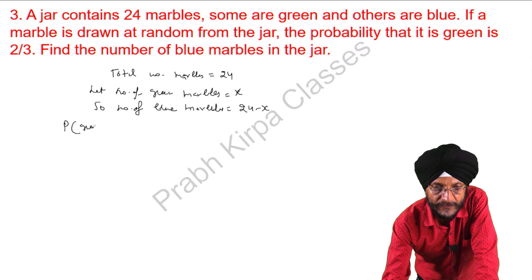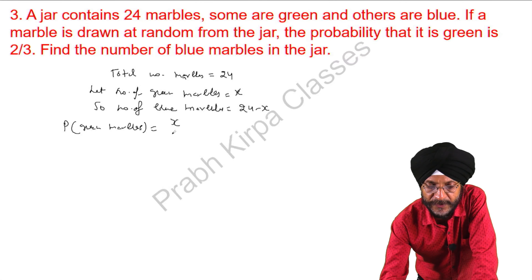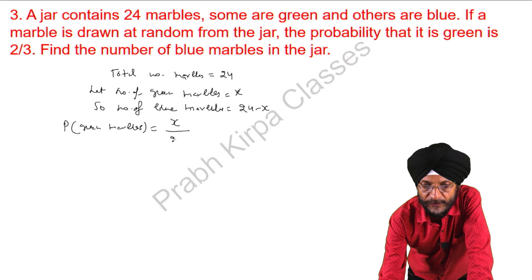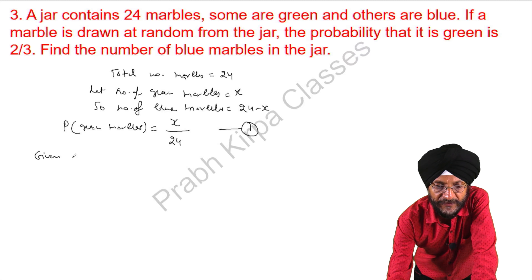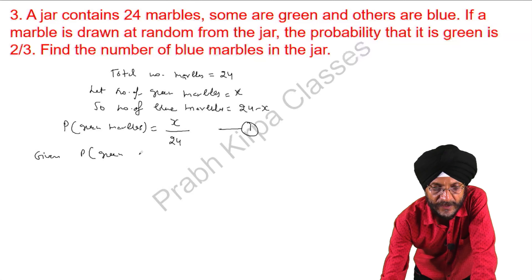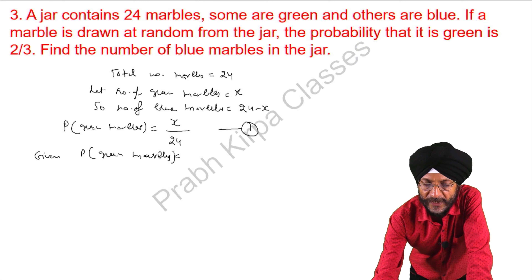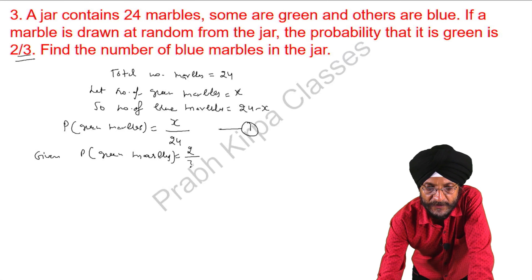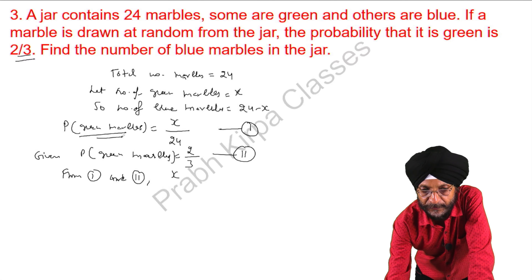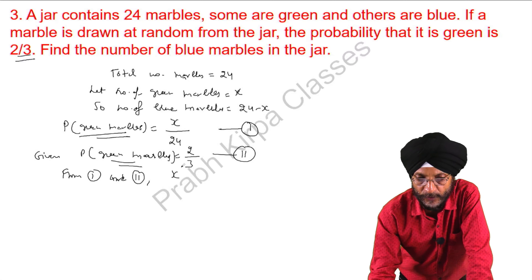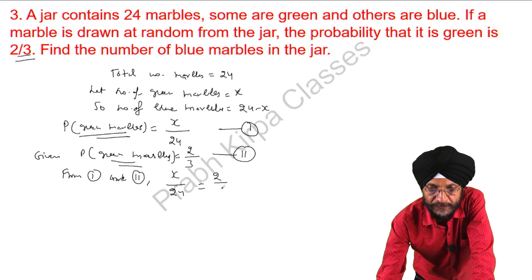The probability of green marbles equals the number of favorable outcomes — the number of green marbles — divided by the total number of marbles. The given probability of green marbles is 2 over 3. Equating both expressions, x over 24 equals 2 over 3.